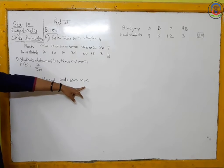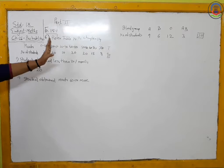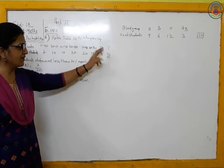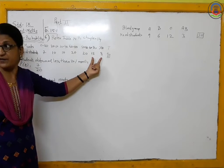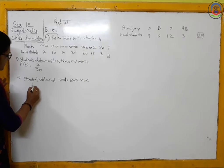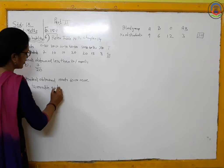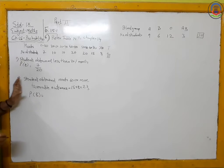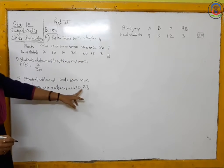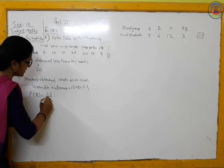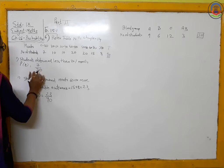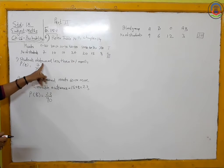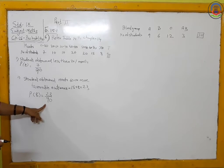Next, we find the probability that a student obtained 60 or more marks. The students who scored 60 or more fall in the intervals 60 to 70 and above 70. Counting those, we get 15 plus 8 which equals 23 students. So the probability of the event where the student obtained 60 or more marks is 23 upon 90. To summarize: probability for less than 20% marks is 7/90, and for 60 or more marks is 23/90.